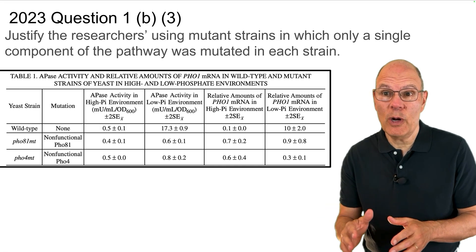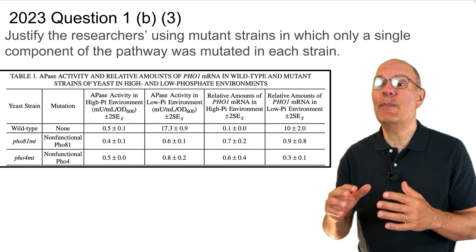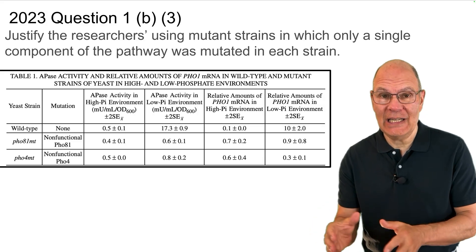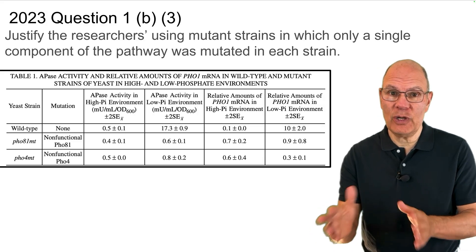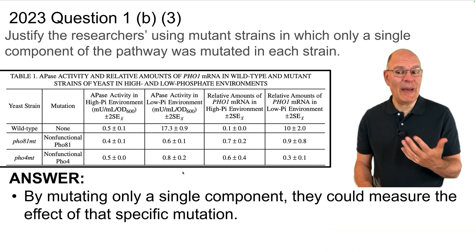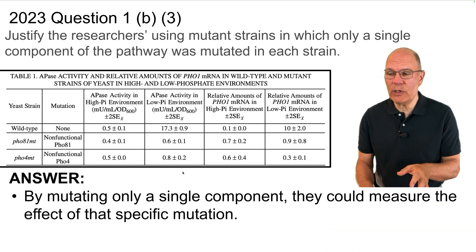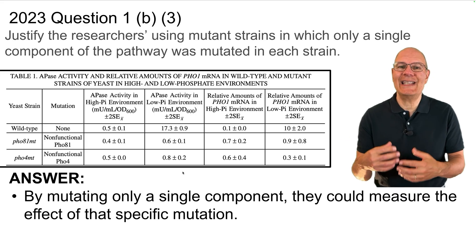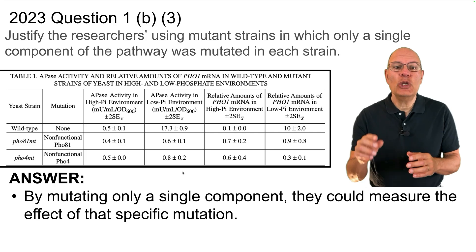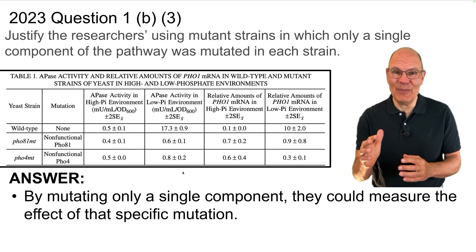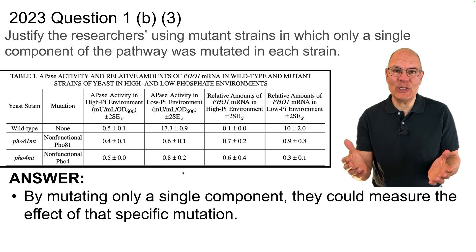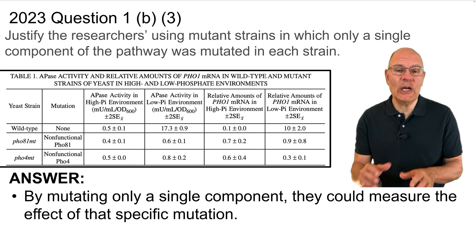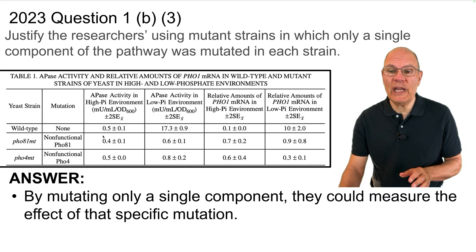Question 1b, Part 3: Justify the researchers using mutant strains in which only a single component of the pathway was mutated in each strain. By mutating only a single component, they could measure the effect of that specific mutation. This gets at the essence of the scientific method: you change one thing at a time. That's what a controlled experiment is — you change one thing and see the effect of that one change.